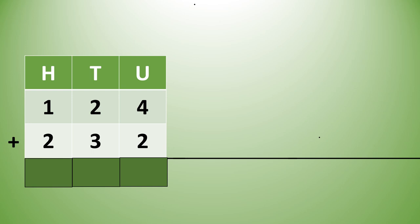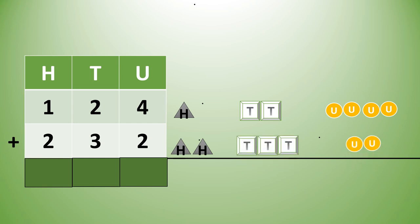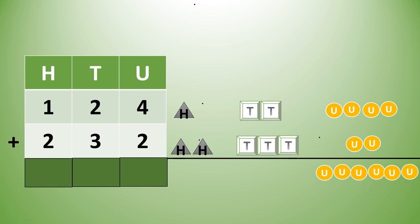124 plus 232. In 124 we have 1 hundred, 2 tens, 4 units. In 232 we have 2 hundreds, 3 tens, and 2 units. First we shall add the units place numbers — that is 4 units plus 2 units will give us 6 units.